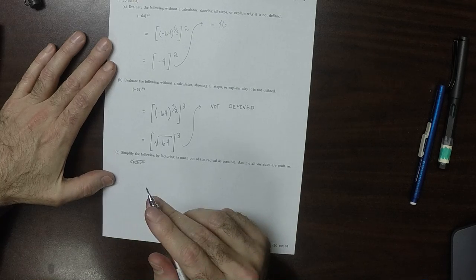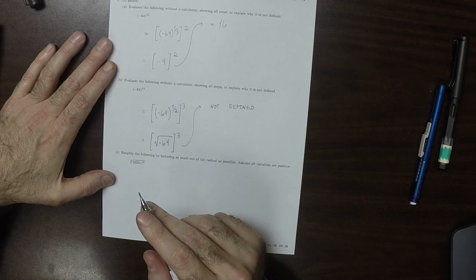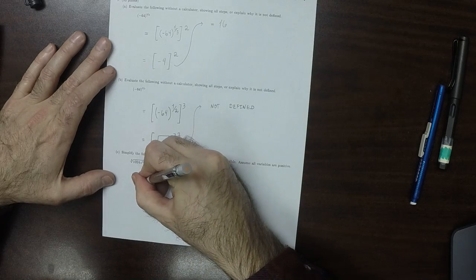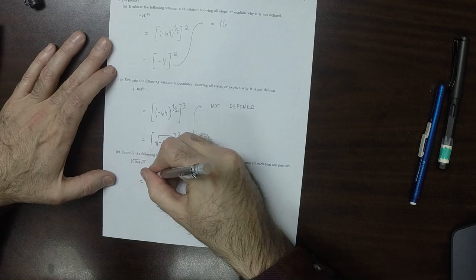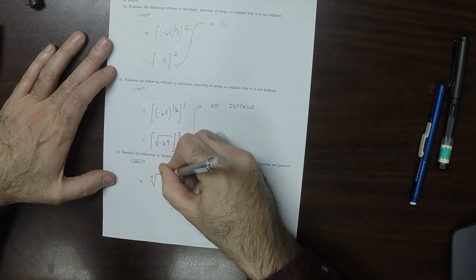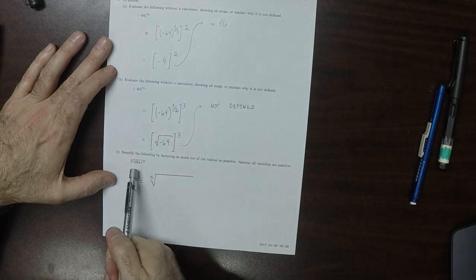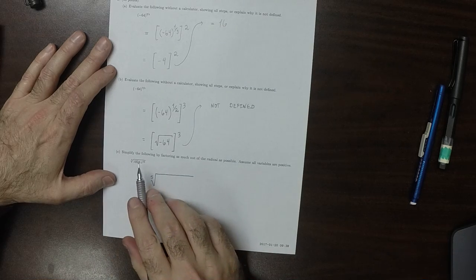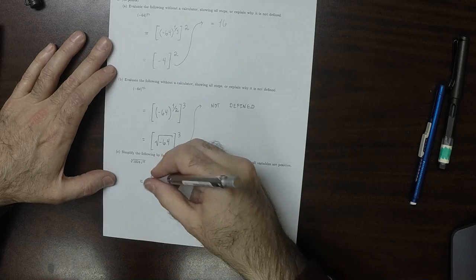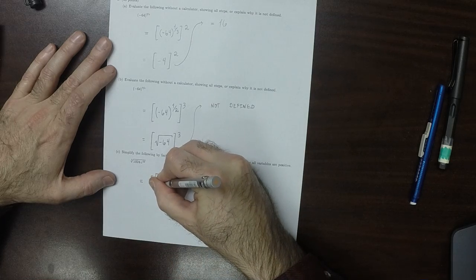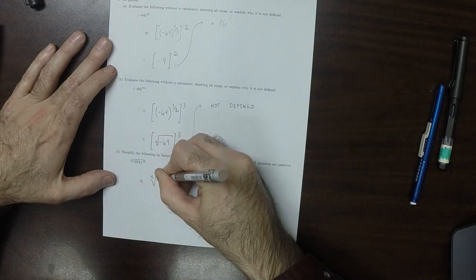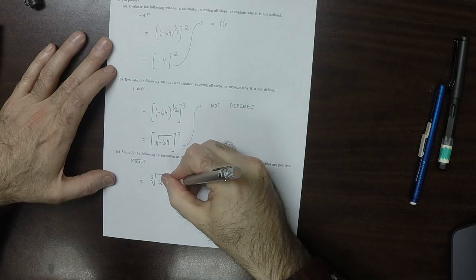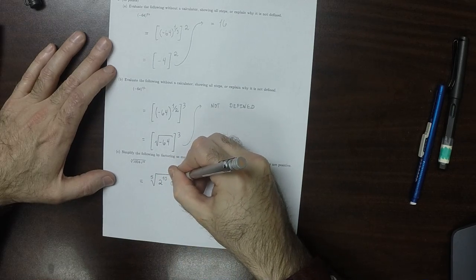For this one, that's the 5th root of 1024 and C to the 10th. We need to break things into groups of 5. 1024 is actually 2 to the 10th, and the other thing is exactly C to the 10th.